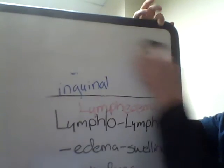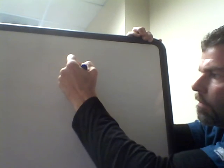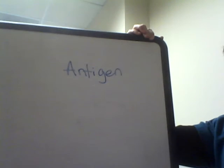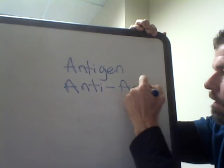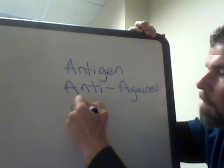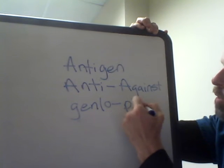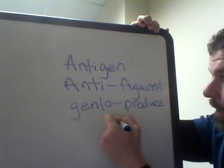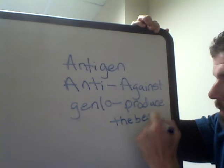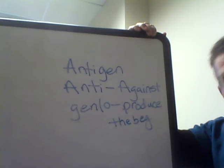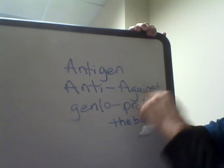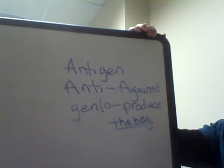One other interesting term associated with the lymphatic system is antigen. This is a unique term because it comes from the prefix anti, which means against, and the combining form geno, which means to produce or the beginning — just like in the Bible, the chapter Genesis means the beginning, in the beginning. So this term means against producing, or against the beginning.